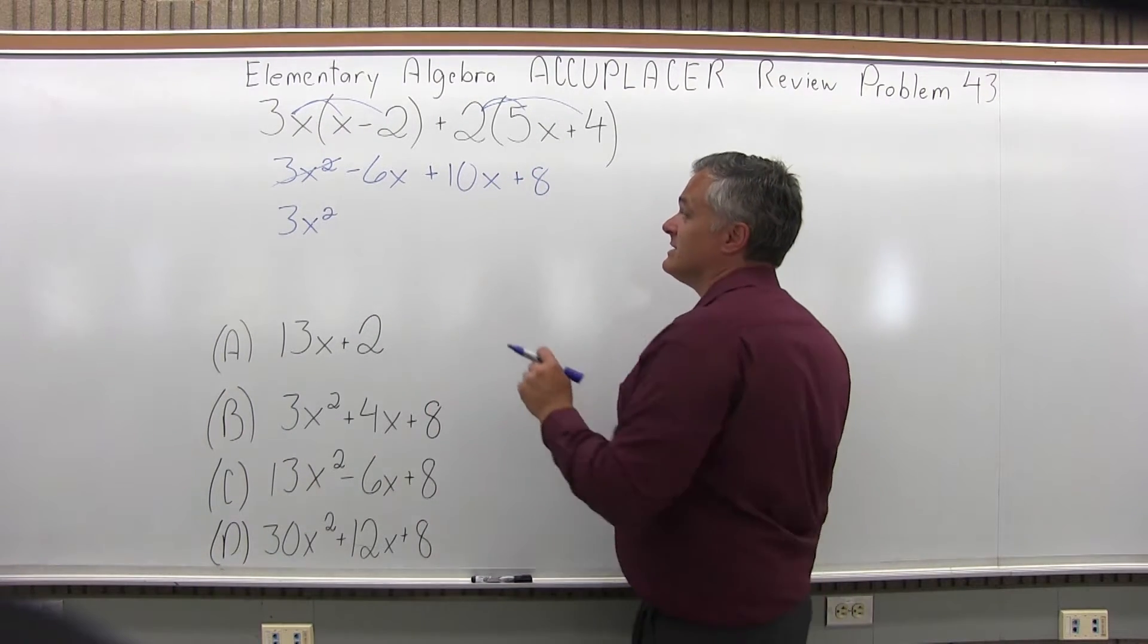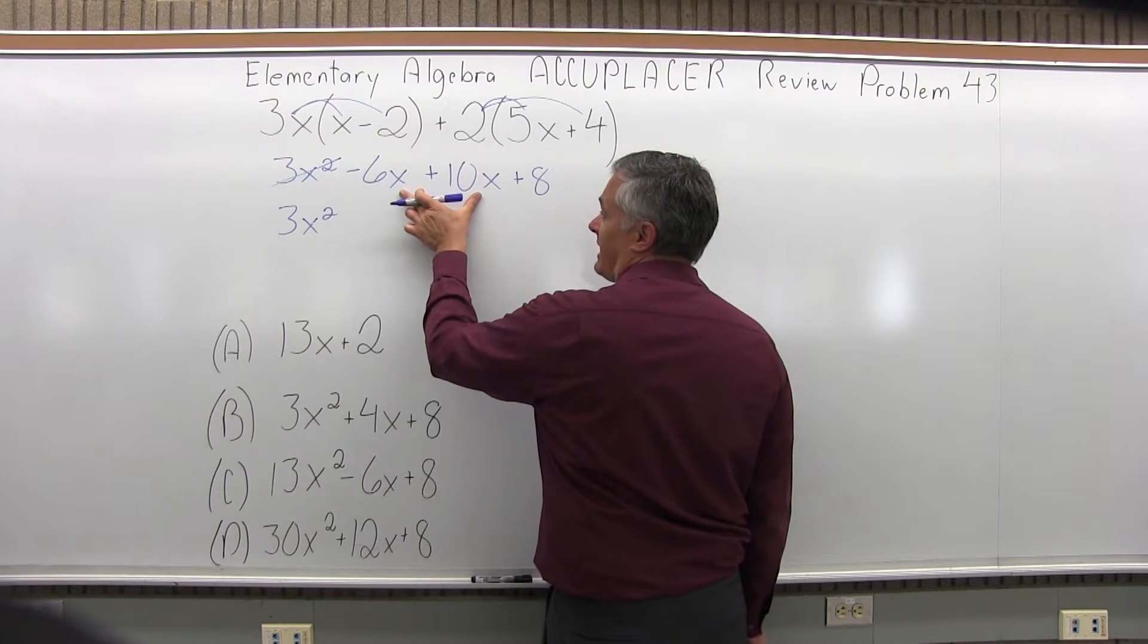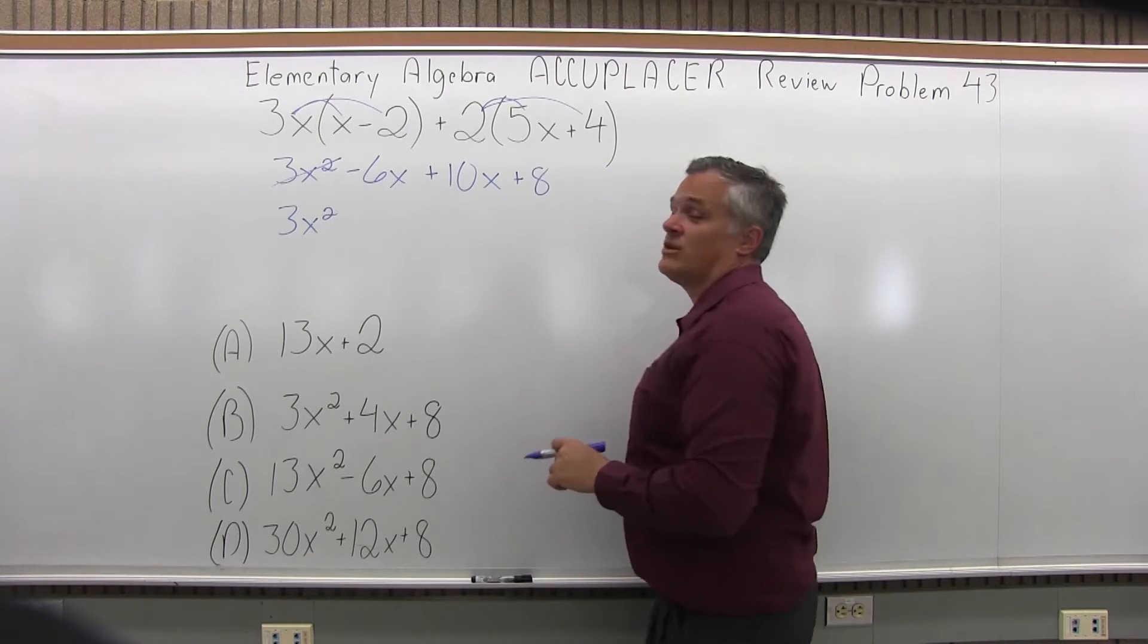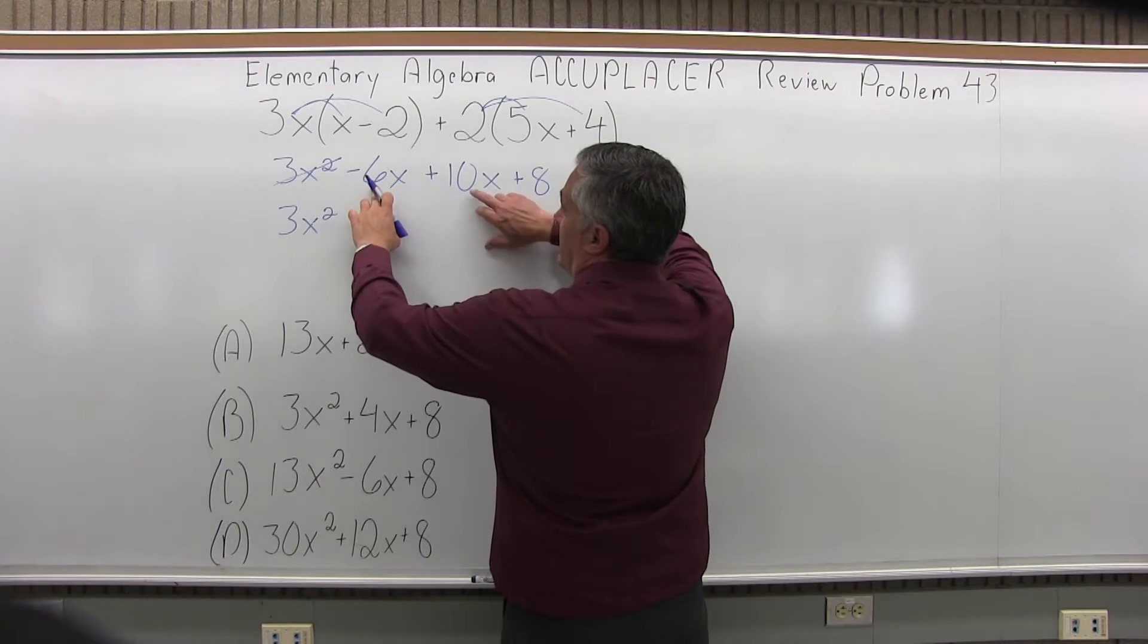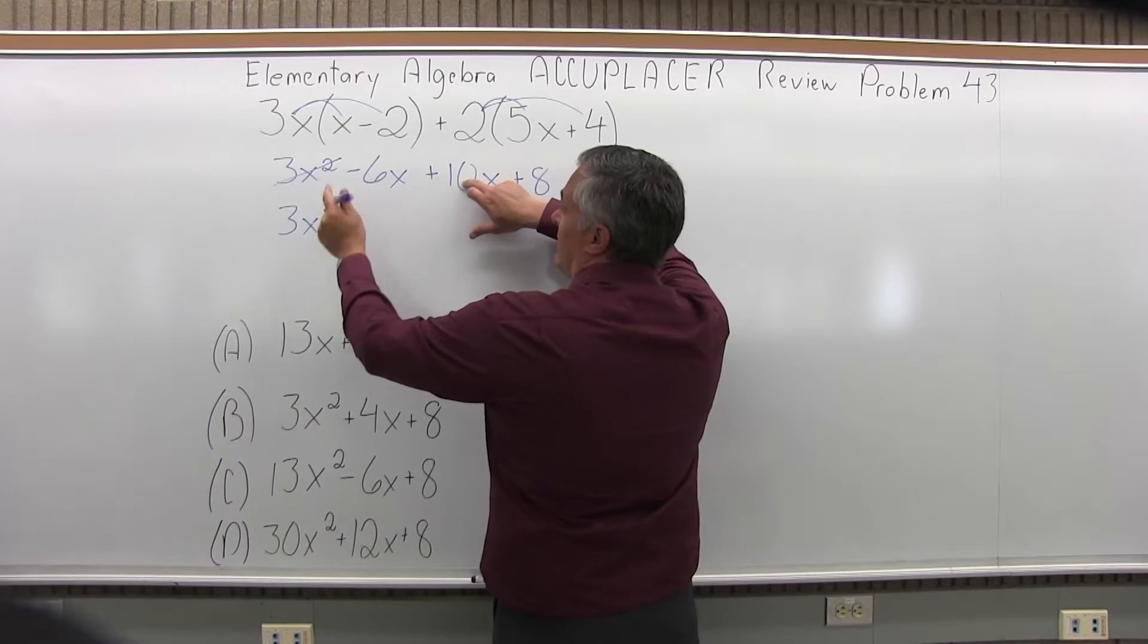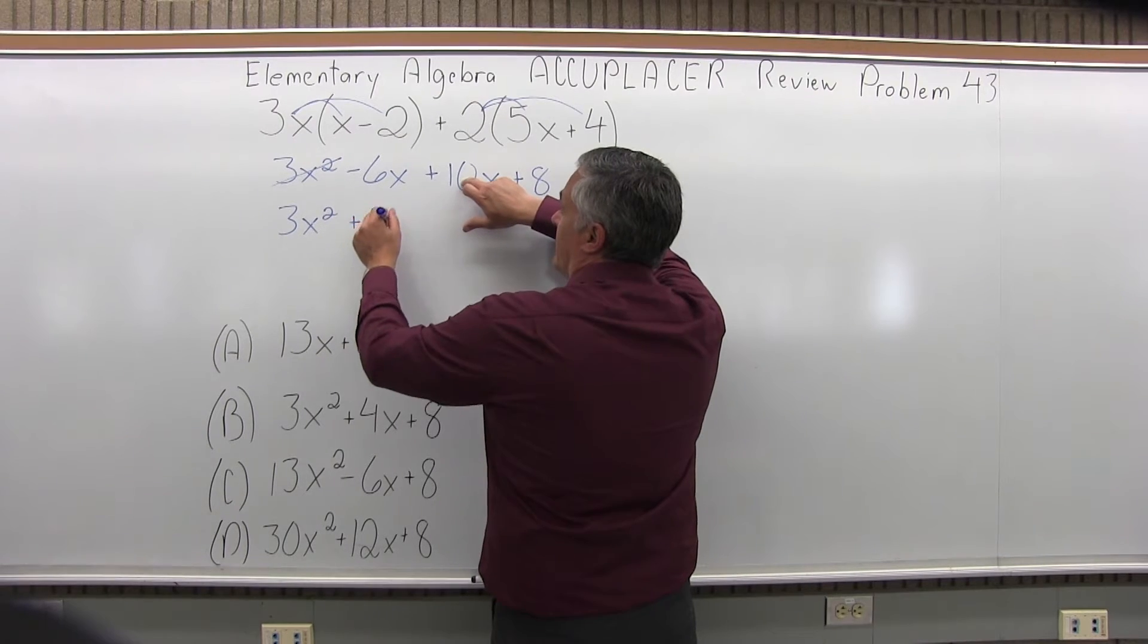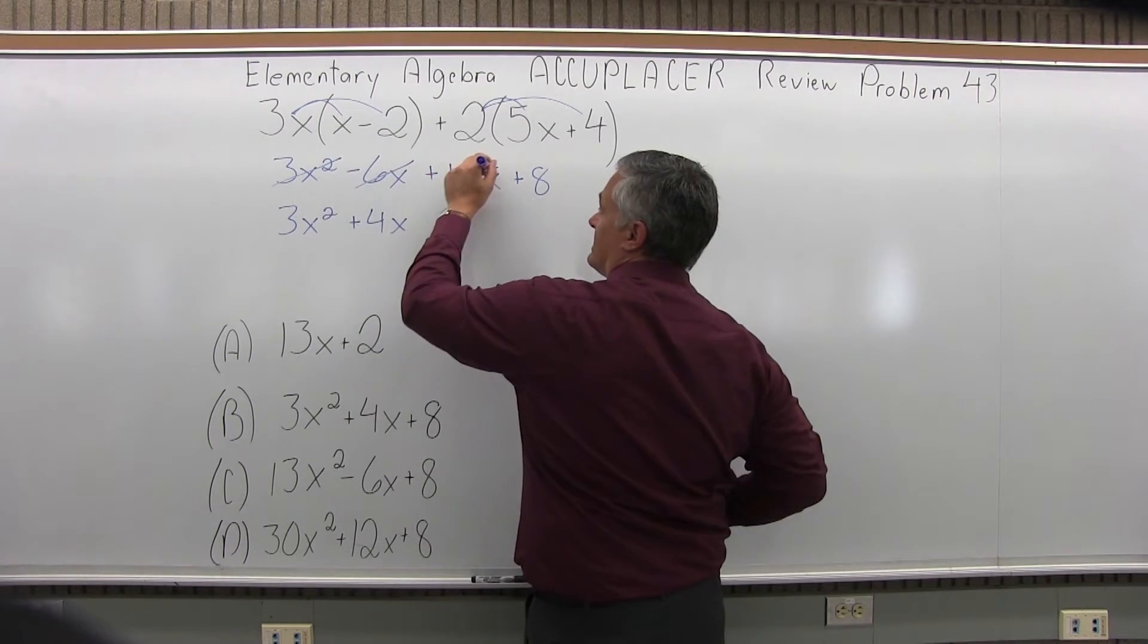Now for the x's, I have x's showing up in two spots. I have a negative 6x and a positive 10x so they can be combined. And I do that by combining the numbers in front. Negative 6 and positive 10 would be plus 4, and that's x. So that takes care of the x's.